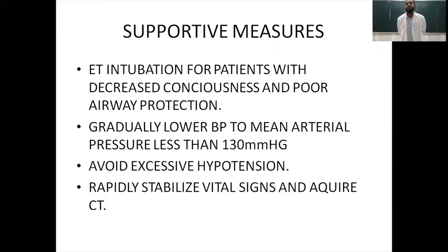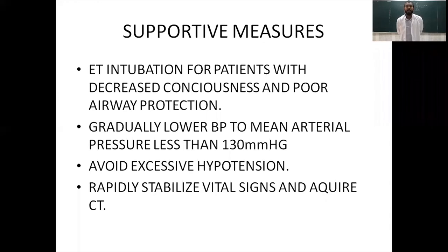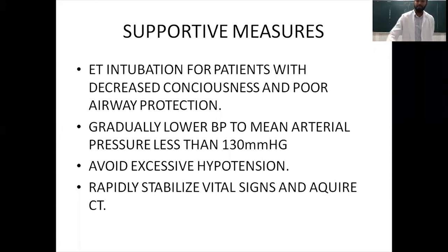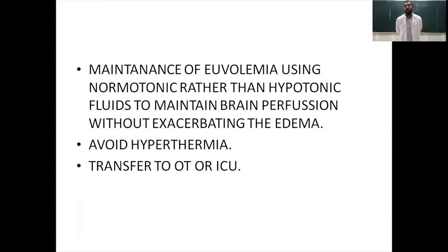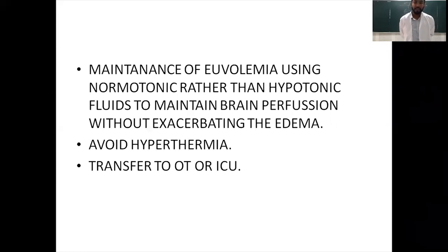Supportive measures include endotracheal intubation for patients with decreased consciousness or poor airway protection. Blood pressure should be gradually lowered to a mean arterial pressure less than 130 mmHg while avoiding excessive hypotension — the newer concept accepts a certain level of hypotension as reperfusion injuries can be more dangerous. Rapidly stabilize vital signs and acquire a CT. Maintain euvolemia using normotonic rather than hypotonic solutions to maintain brain perfusion without exacerbating edema. Avoid hyperthermia, then transfer to the operating theater or ICU.